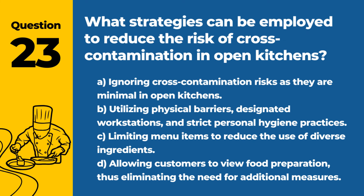Question 23. What strategies can be employed to reduce the risk of cross-contamination in open kitchens? a. Ignoring cross-contamination risks as they are minimal in open kitchens. b. Utilizing physical barriers, designated workstations, and strict personal hygiene practices. c. Limiting menu items to reduce the use of diverse ingredients. d. Allowing customers to view food preparation, thus eliminating the need for additional measures. Answer: b. Utilizing physical barriers, designated workstations, and strict personal hygiene practices. Effective strategies are essential to mitigate cross-contamination risks in open kitchen layouts.